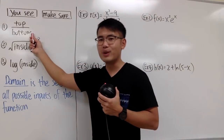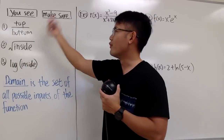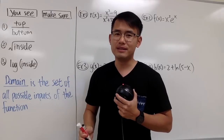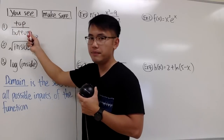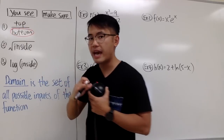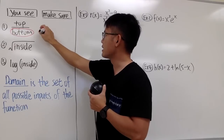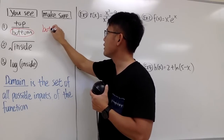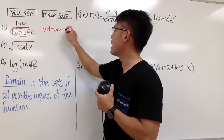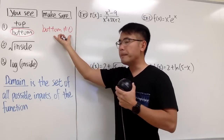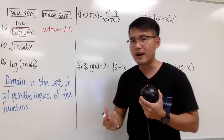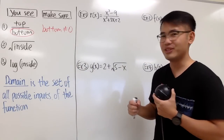Let's go over the first situation when we see a fraction — top over bottom, of course. As we all know, we cannot divide by zero. So if this is what you see, you have to make sure that the bottom cannot be zero. This is how you set up a condition. We have to make sure that the bottom cannot be zero, and you have to remember this condition so you can set up an inequality and find the bad numbers for x, for the inputs in general.